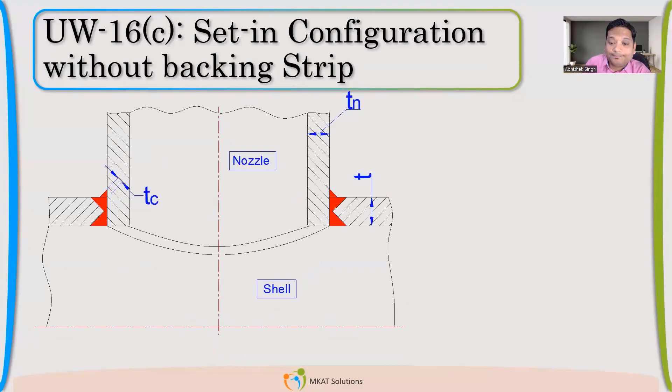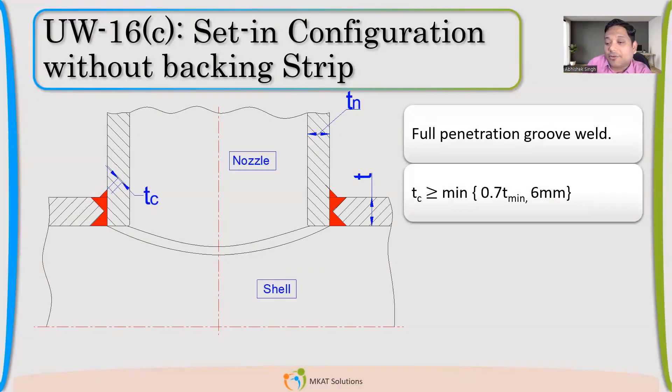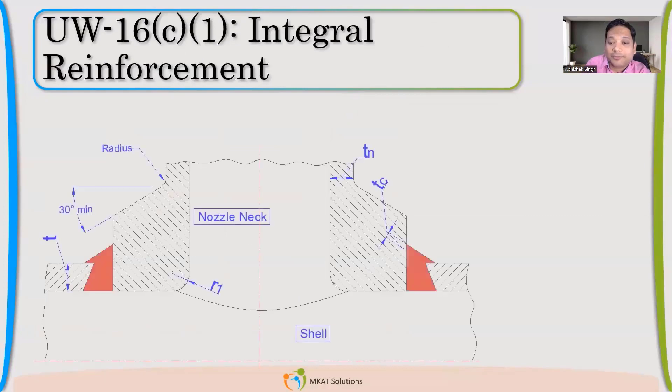So now, same joint with both side welding. Double V. Again, no change. TC requirement will be 0.7 times T minimum, 6 mm. Whatever is the minimum. Now, in set-in nozzle, we can have a different type of nozzle. Anybody can tell me what we call this type of nozzle? Rajshekar, you are absolutely right. 0.7 times into 19, if for higher thicknesses.